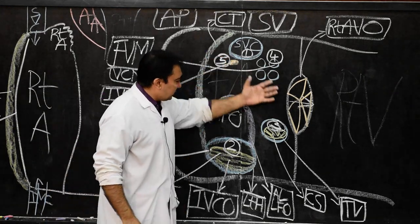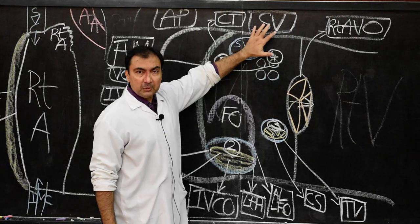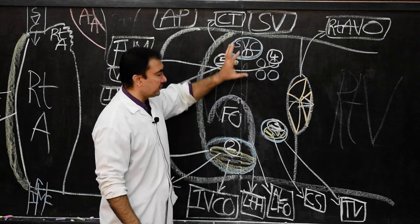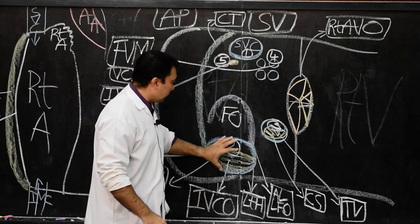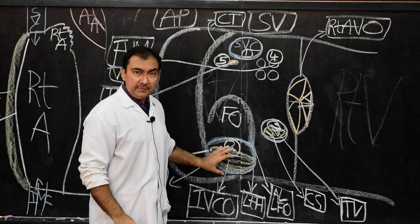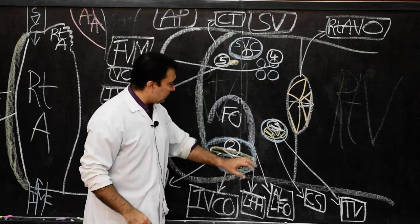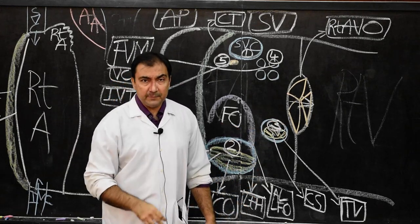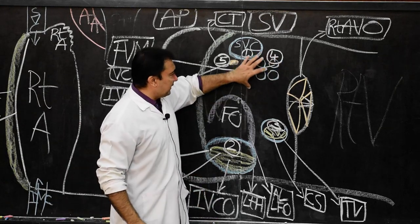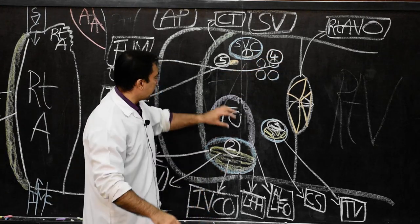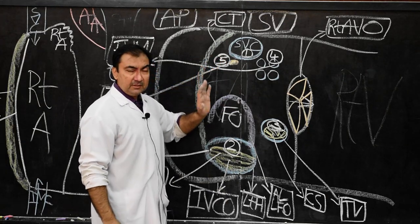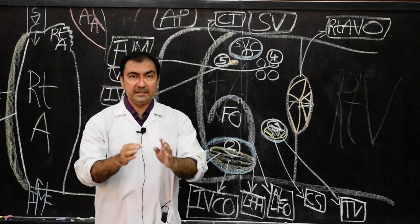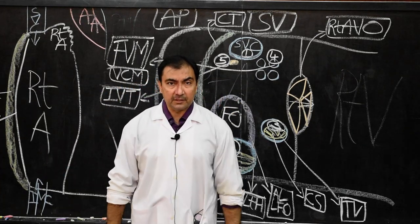To summarize: in the smooth posterior part of the right atrium called sinus venarum, the structures are — number one, opening of superior vena cava; number two, opening of inferior vena cava with its rudimentary semilunar eustachian valve; number three, opening of coronary sinus with its incomplete semicircular Thebesian valve; number four, foramina venarum minimarum; and number five, intravenous tubercle. This completes the sinus venarum part of the interior of the right atrium. Thank you very much.